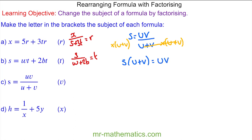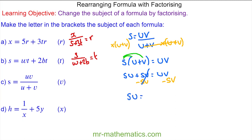To make v the subject we need to unlock it from this bracket, which we can do by multiplying it out, so we have su plus sv is equal to uv. Now we need the v's on one side, so we'll move sv over to the other side by taking sv away from both sides — these will cancel.